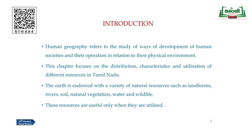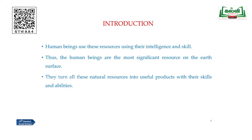Human geography refers to the study of ways of development of human societies and their operation in relation to their physical environment. This chapter focuses on the distribution, characteristics and utilization of different resources in Tamil Nadu. The earth is endowed with a variety of natural resources such as landforms, rivers, soil, natural vegetation, water and wildlife. Human beings use these resources using their intelligence and skill, making them the most significant resources on the earth's surface. They turn all these natural resources into useful products with their skills and abilities.